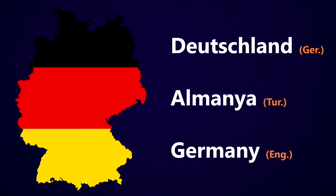So in this lesson, we're going to focus on the words and names we use for different countries in the world, the people who come from those countries and the languages they speak. And we're going to focus on some of the suffixes that we use to name these places and these people so that you can see the patterns in English.